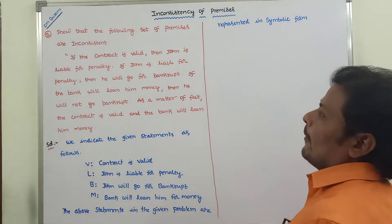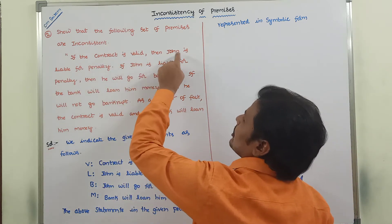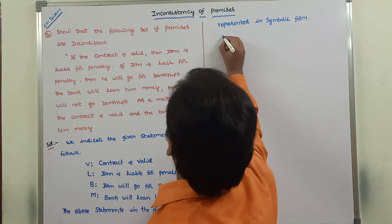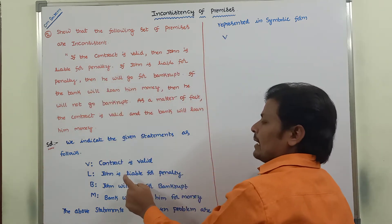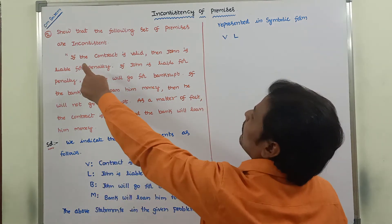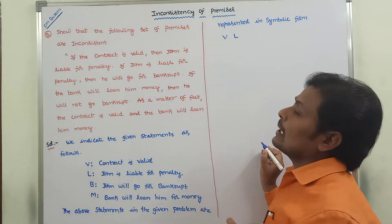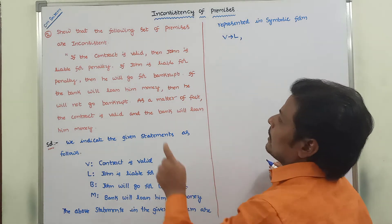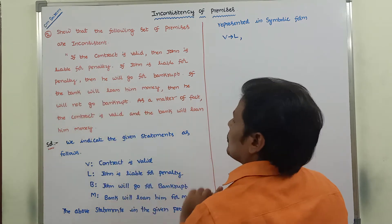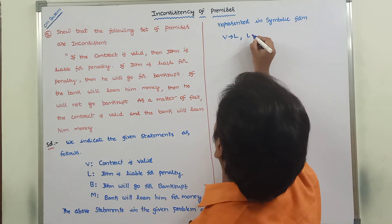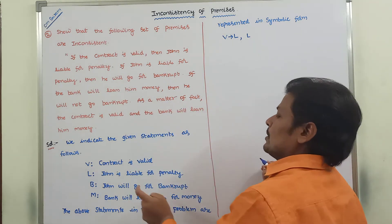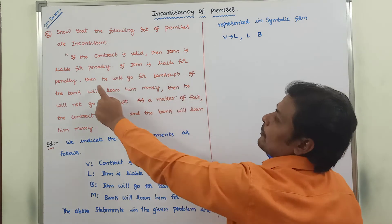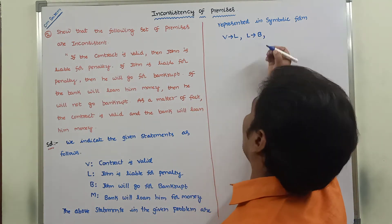The above statements in the given problem are represented in symbolic form. First statement: if the contract is valid, then John is liable for penalty. Contract is valid is denoted by V, John is liable for penalty is denoted by L, and in between them the if-then connective is used, which is denoted by the conditional symbol. This is the first premise: V → L. Next premise: if John is liable for penalty — denoted by L — then he will go for bankrupt — denoted by B. The if-then connective gives us the conditional symbol, so this is L → B.